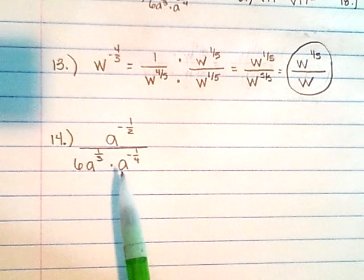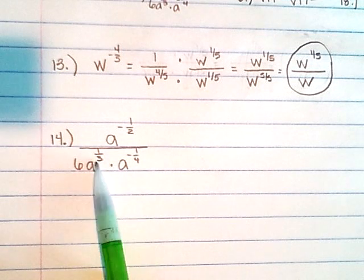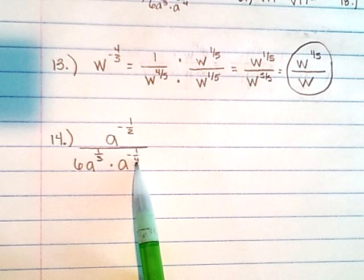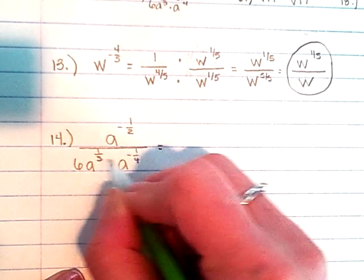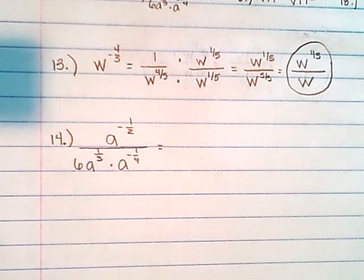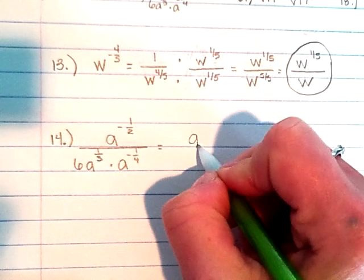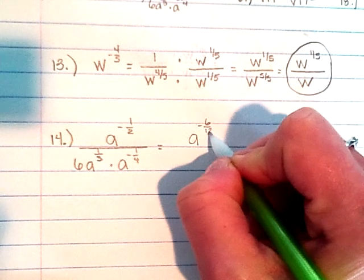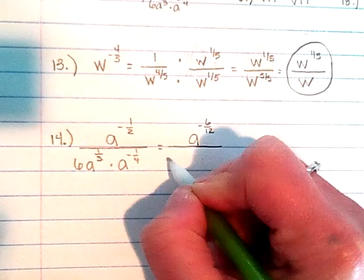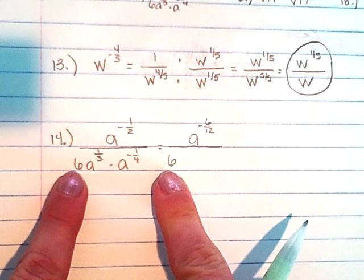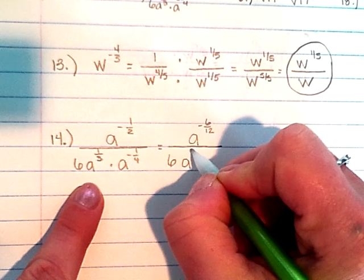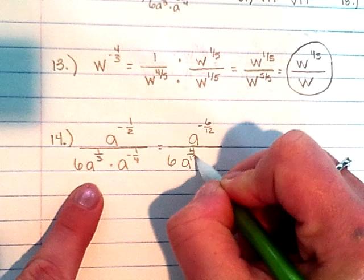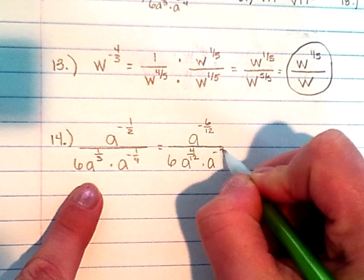In order to handle that, I'm going to find the common denominator between all three of these fractions. The common denominator of 3, 4, and 2 is going to be 12. So I'm going to rewrite those fractions: a to the negative 6-twelfths power divided by — the 6 stays put because it doesn't have a negative exponent — a to the 4-twelfths power times a to the negative 3-twelfths power.